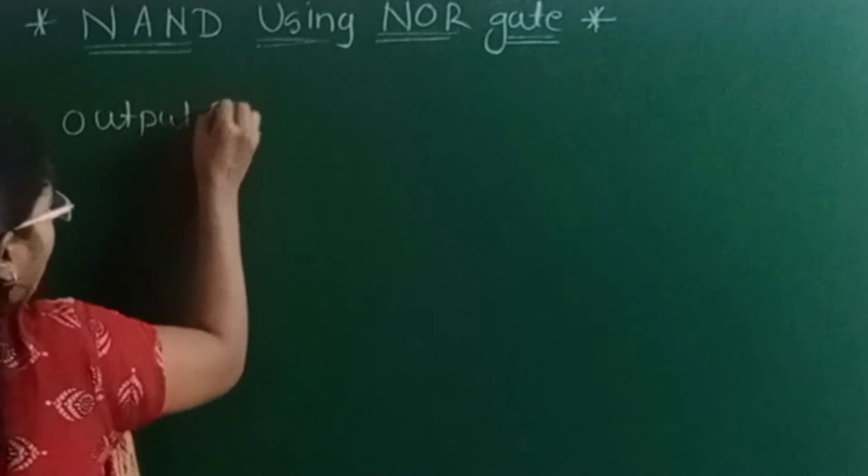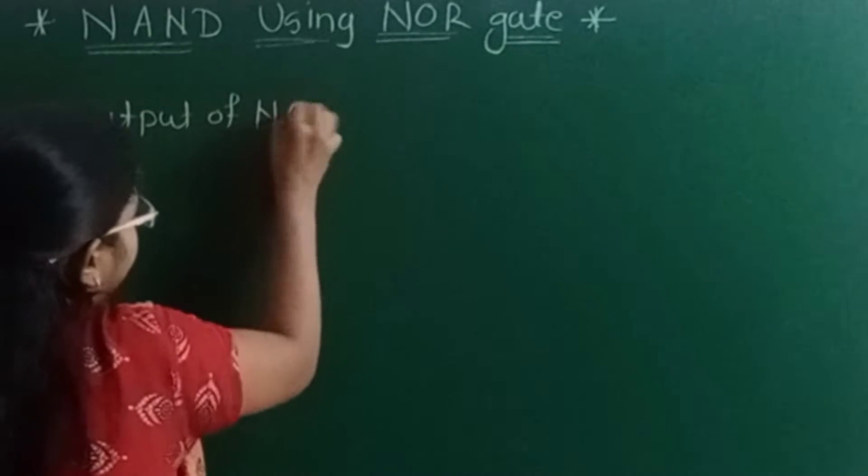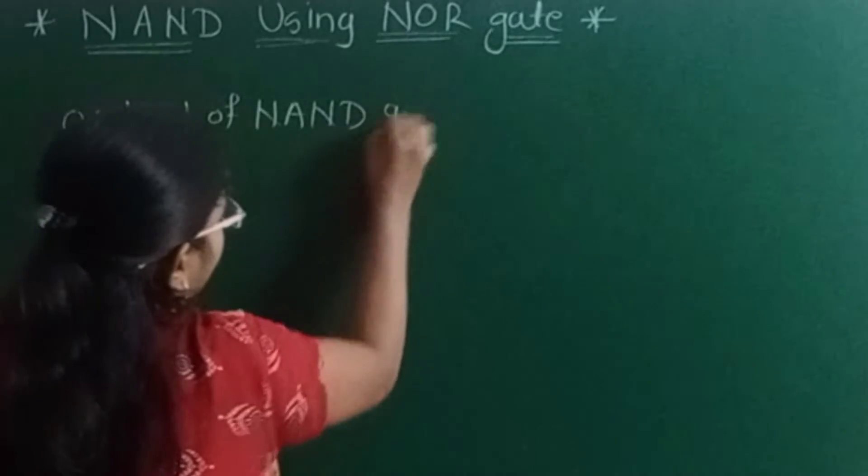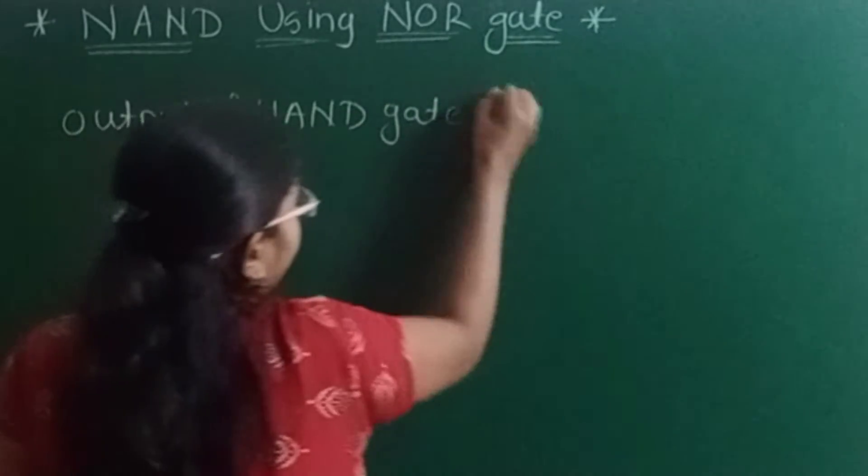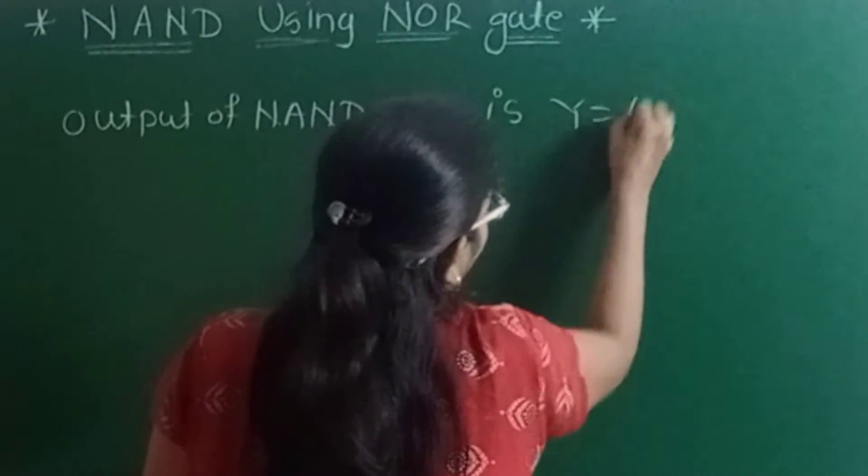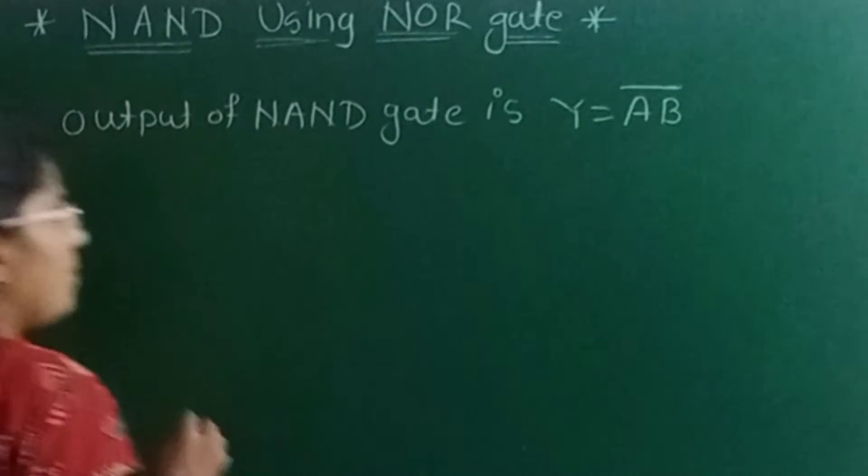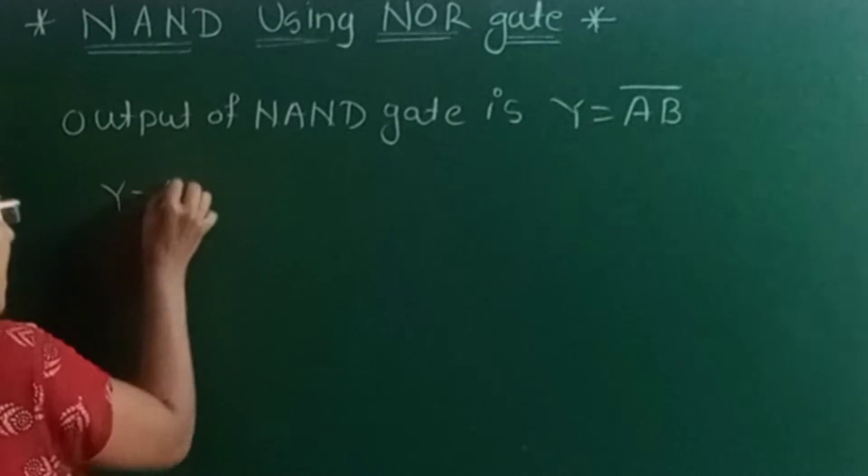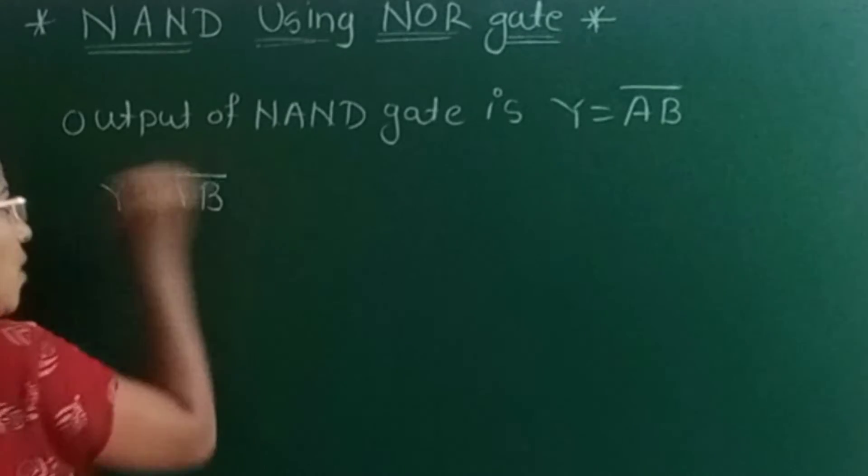Here I will write output of NAND gate is Y equal to AB complement. So here again I will write Y equals AB complement. I want to get this output AB complement by using the NOR.